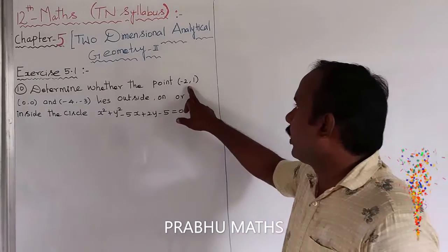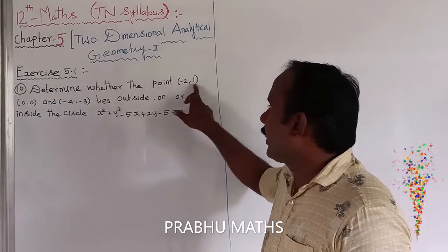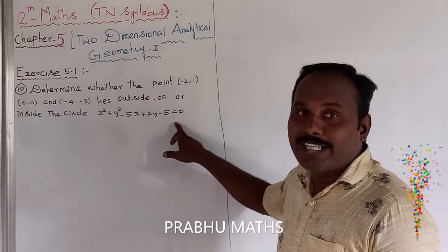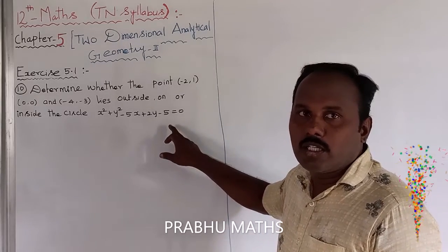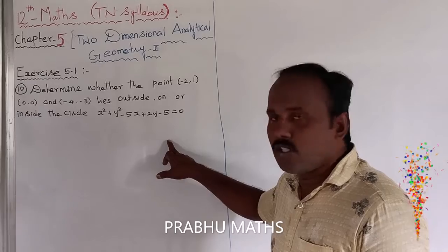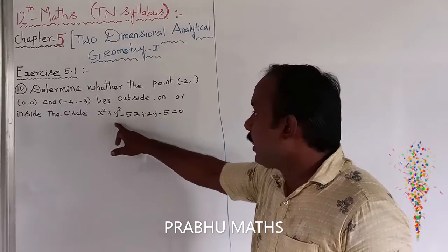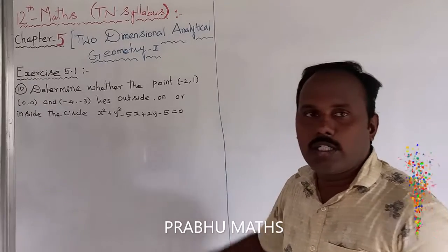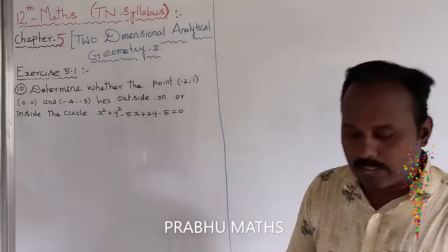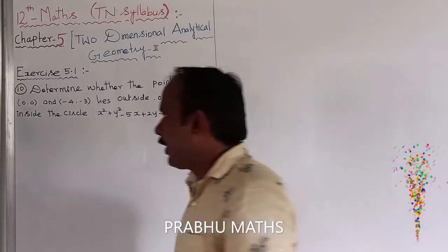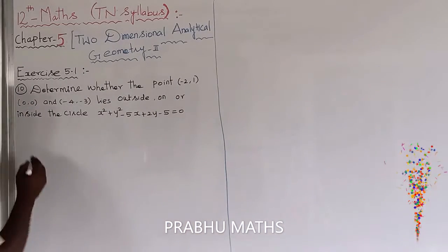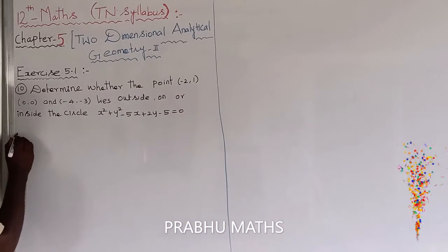So replace x and y compulsory. Greater than 0 means outside point, less than 0 means inside point, equal to 0 means on the circle. So first of all, the given circle equation.